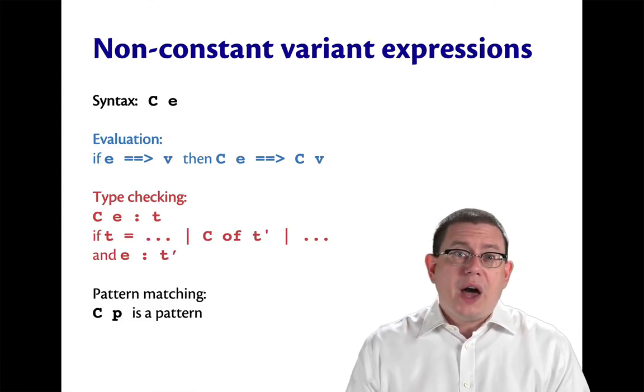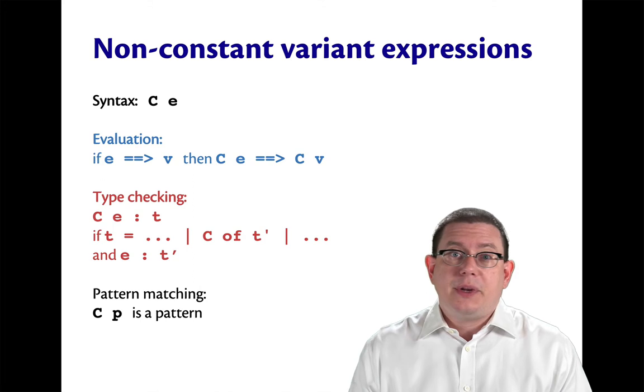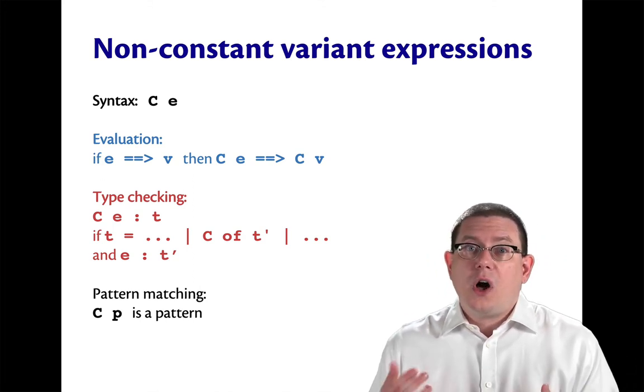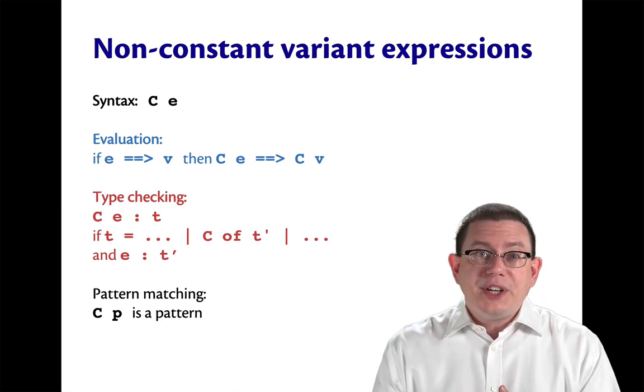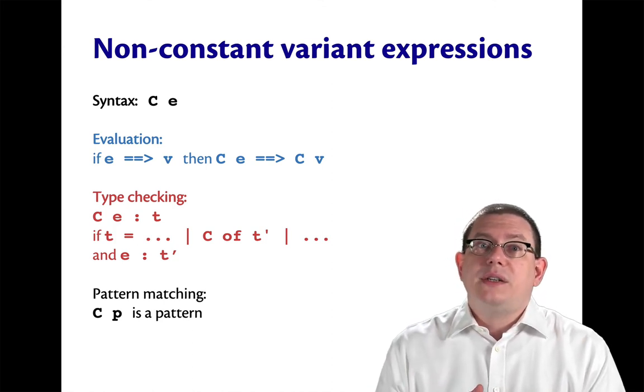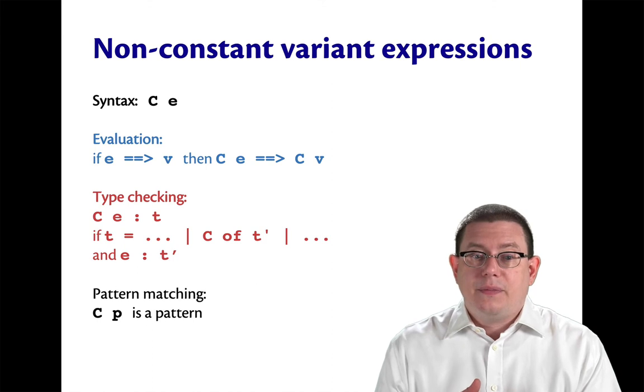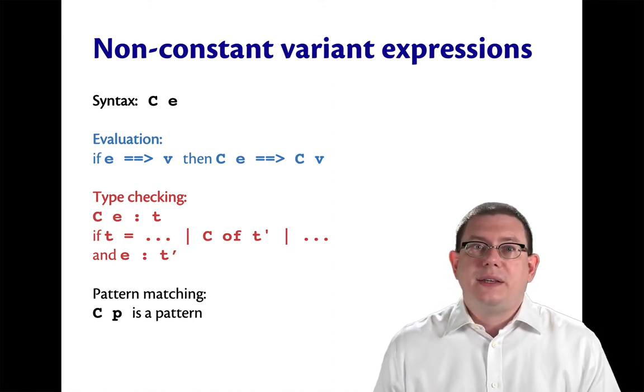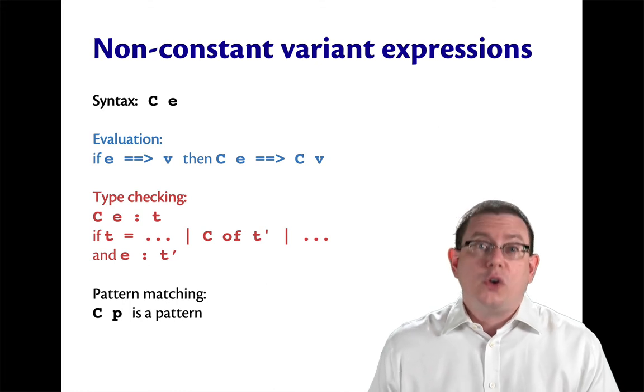There are two kinds of expressions involving variants depending on whether constant or non-constant. So the difference here is that we say a constructor is constant if it carries no data. It's non-constant if it carries some data. And hopefully that makes sense. It's non-constant in the sense that the data that's carried along with it could change.